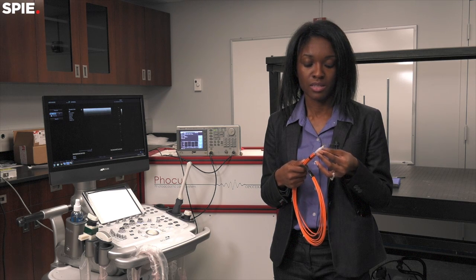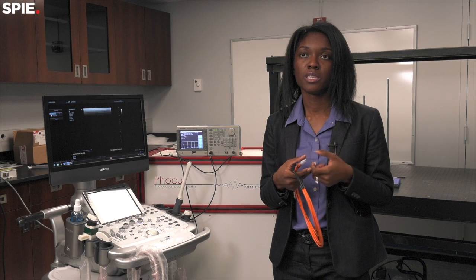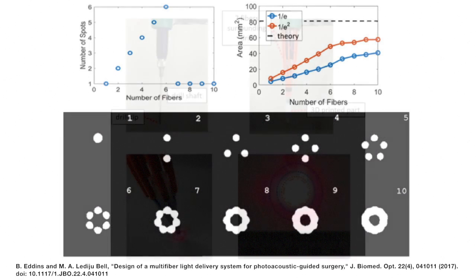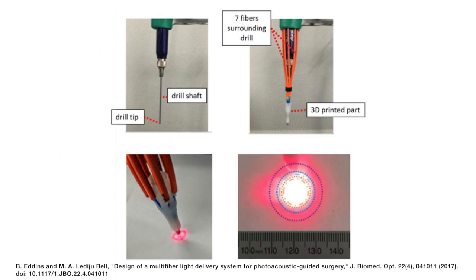To get this nice uniform profile, you want to make sure that you have a nice ring surrounding the tool. To get that ring, you need to know how many fibers are optimal. You don't want to use too few, but you also don't want to use too many. This is some of the innovation that's required to attach these specialized light delivery systems we're developing in my lab to surgical tools.